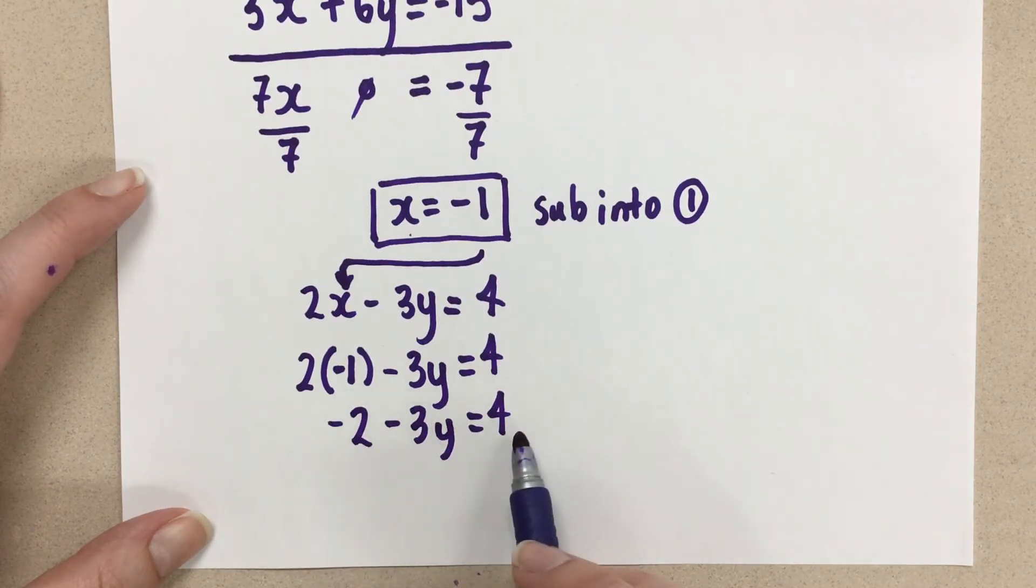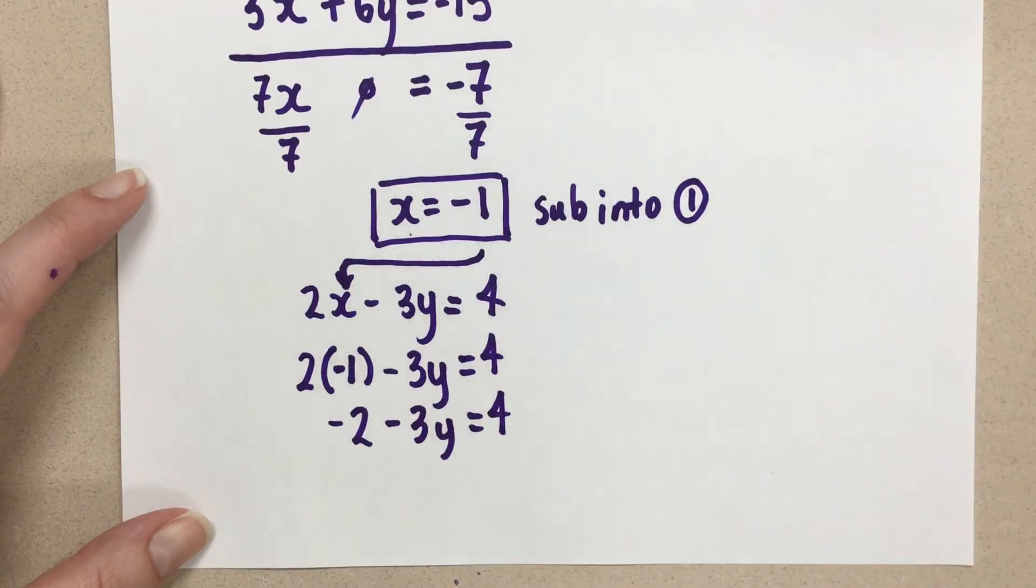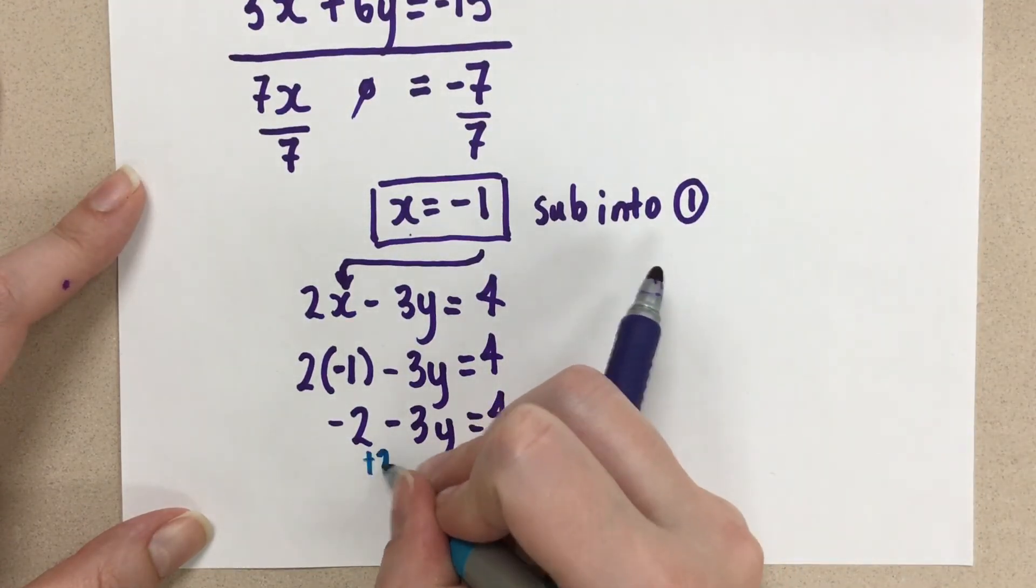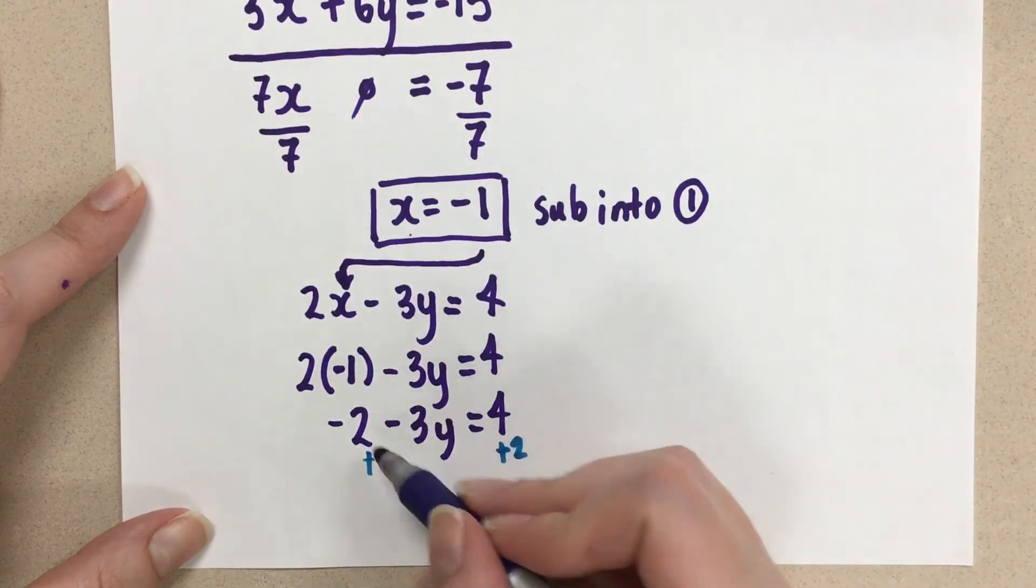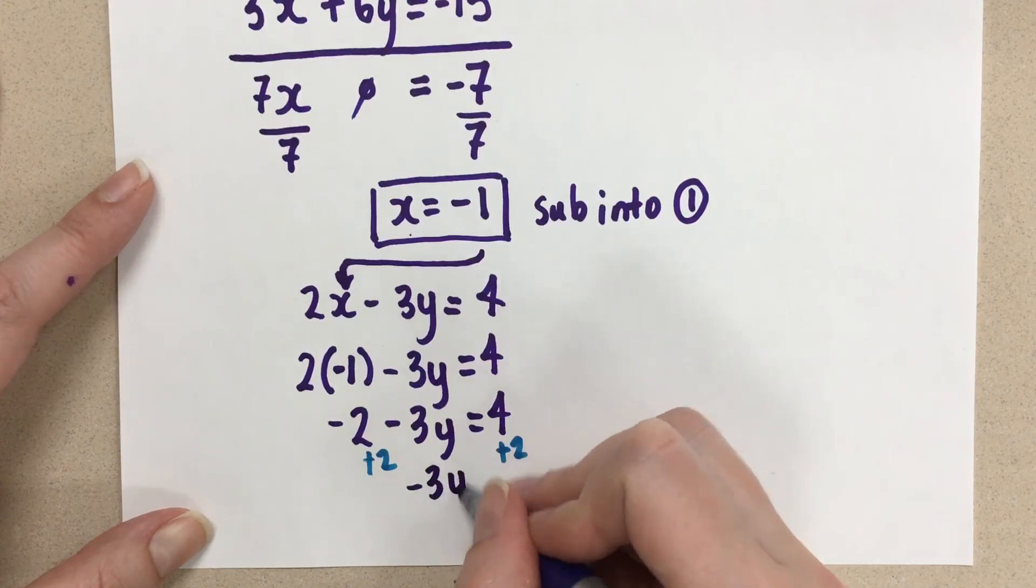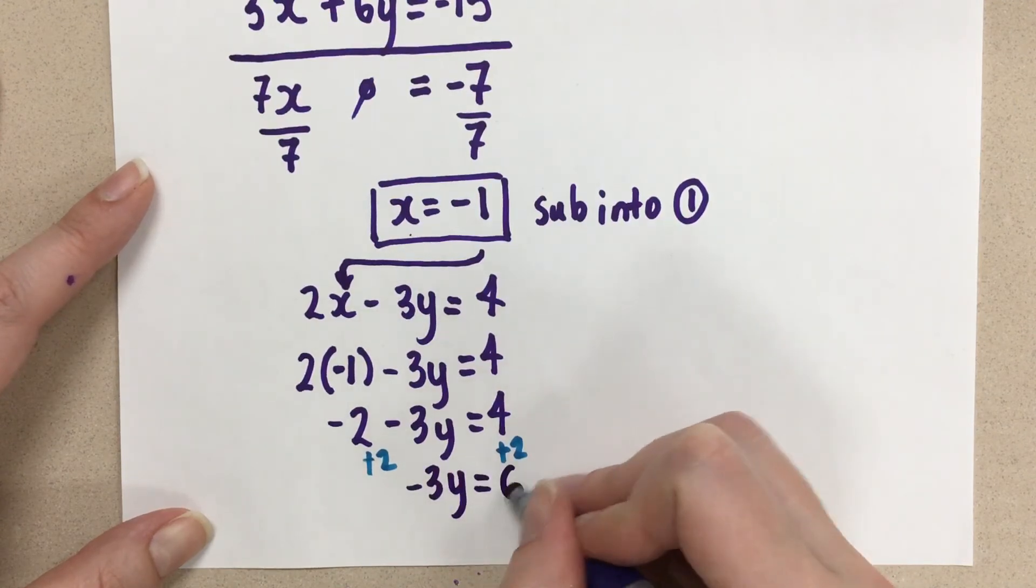So we're going to bring this negative 2 to the other side by doing the opposite operation. Add 2 to both sides. So this gives us plus 2 here, plus 2 here.